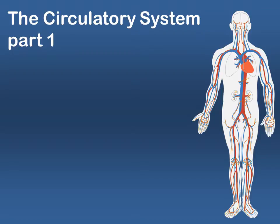The circulatory system is composed of our heart and the major blood vessels that run through our body. It's also referred to as the cardiovascular system.